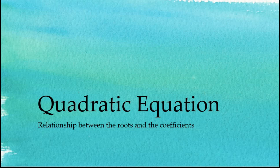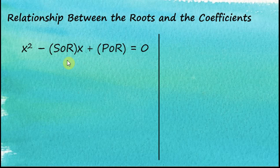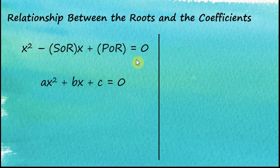Quadratic equation: relationship between the roots and the coefficients. In a previous video, we learned that we can form a quadratic equation from the roots using x squared minus the sum of roots times x plus the product of roots equal to zero. The general form of a quadratic equation is ax squared plus bx plus c equal to zero.